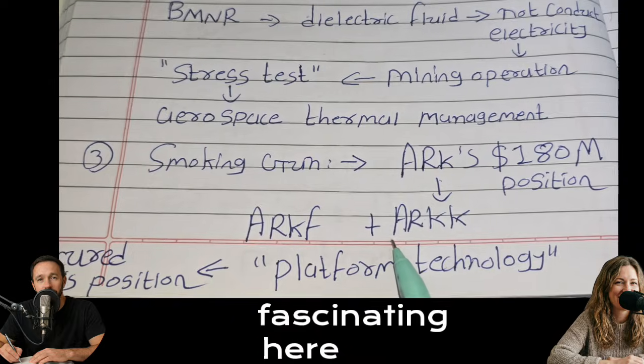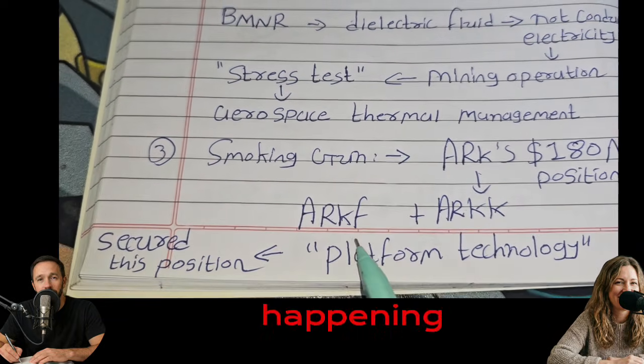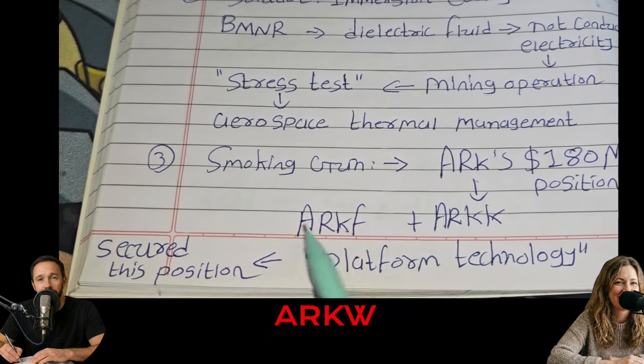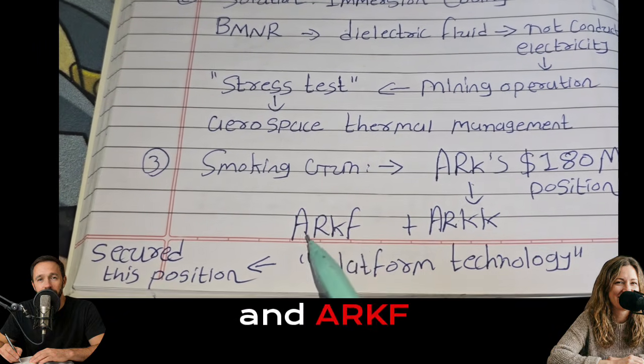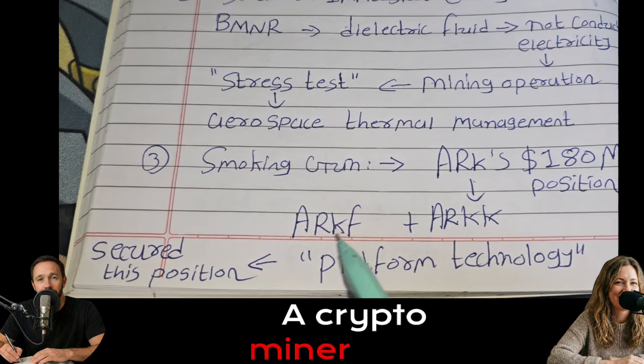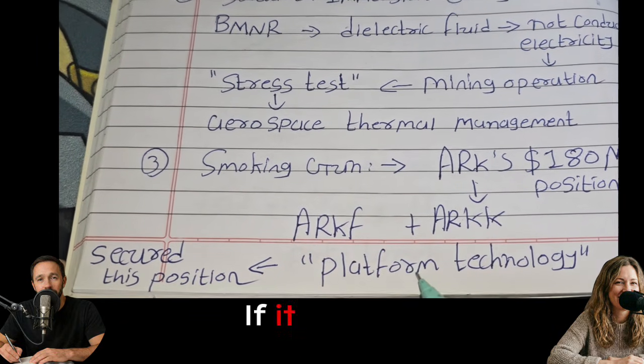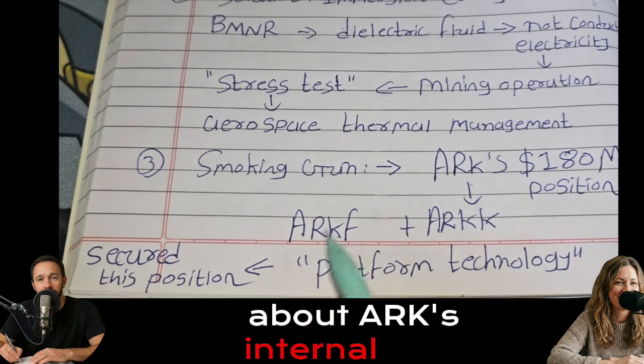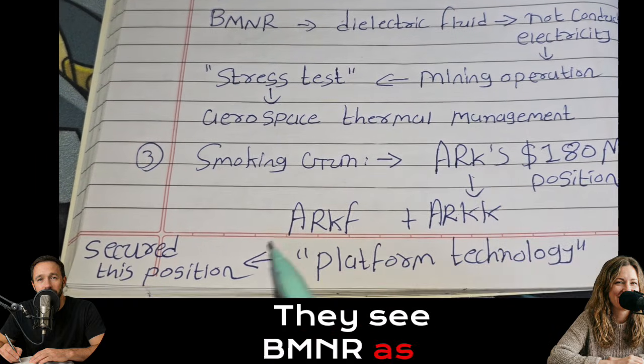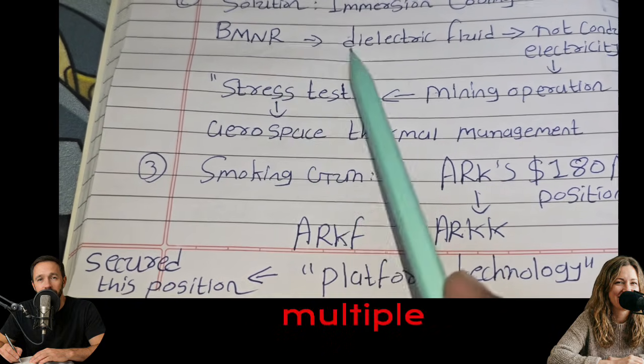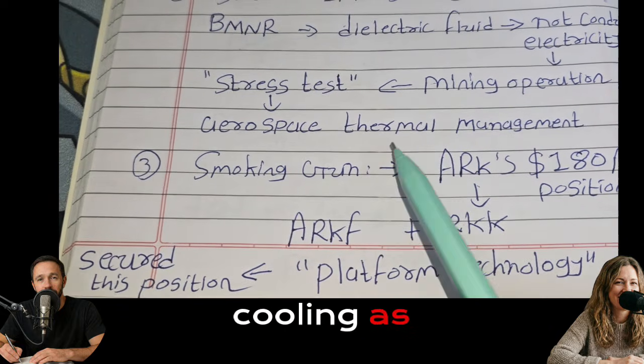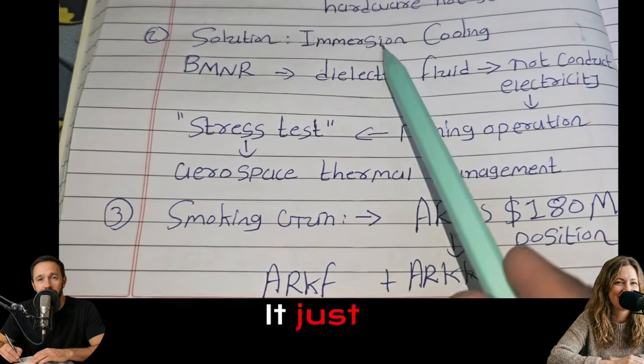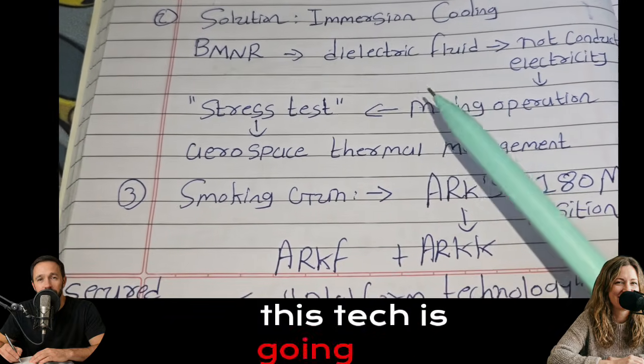But what's really fascinating here is the breadth of the buying. The source notes, it's happening across multiple funds. ARKK, which is their innovation fund. ARKW for next-gen internet. And ARKF for fintech. That's significant. A crypto miner would normally just sit in the fintech fund, right? Exactly. If it were just a play on Bitcoin's price, it stays in fintech. But being in all three tells you something about ARK's internal view. They see BMNR as a platform technology. Meaning it enables multiple different sectors. They view immersion cooling as the foundational layer for fintech, for the internet, and for innovation like space and AI. It just cuts across all the verticals. It suggests they believe this tech is going to be everywhere.